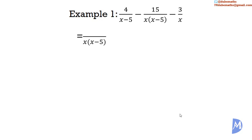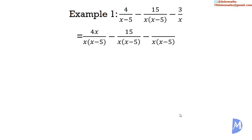We want the first fraction over x(x minus 5), so the denominator has been multiplied by x. We must therefore multiply the numerator by x to keep the fraction equivalent. The second fraction is already over x(x minus 5), so we keep it the same. The third fraction's denominator is multiplied by (x minus 5), so we multiply the numerator by (x minus 5) as well.